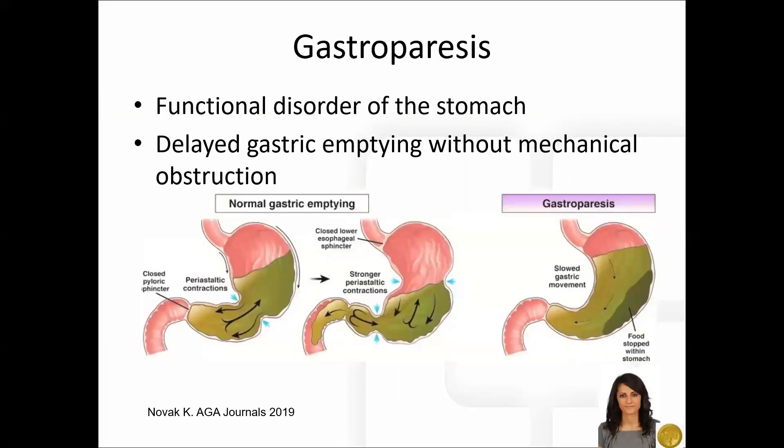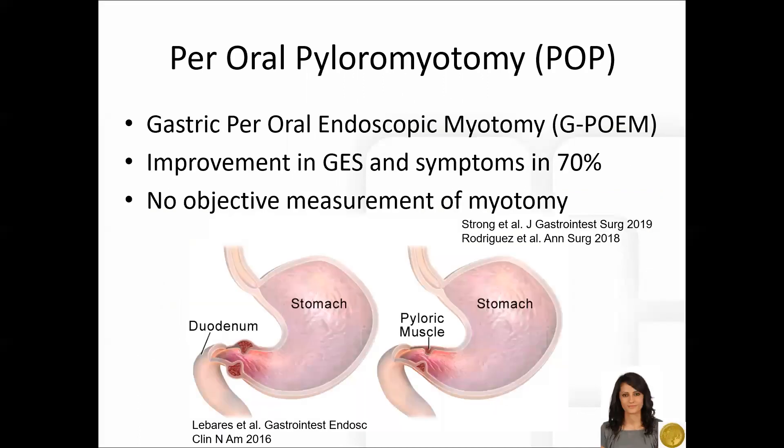I will begin with a review of gastroparesis and the POP procedure. Gastroparesis is a functional disorder of the stomach characterized by delayed gastric emptying without a mechanical obstruction. The per oral pyloromyotomy, also known as the POP or G-POEM procedure, is an endoscopic technique used in the treatment of gastroparesis which has demonstrated symptomatic improvement in 70% of patients, as well as objective improvement in gastric emptying studies.